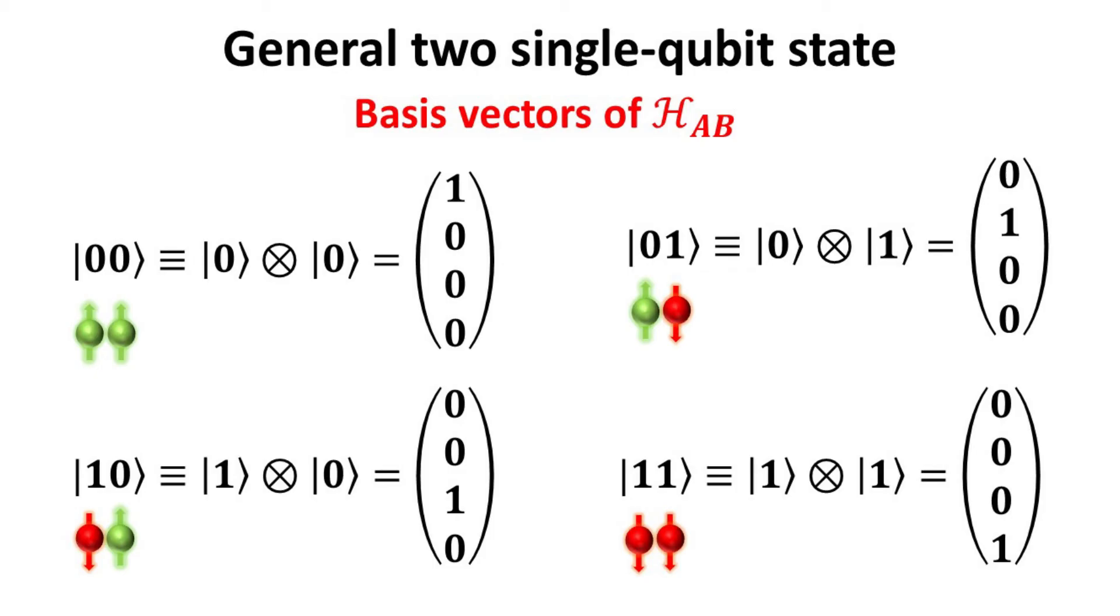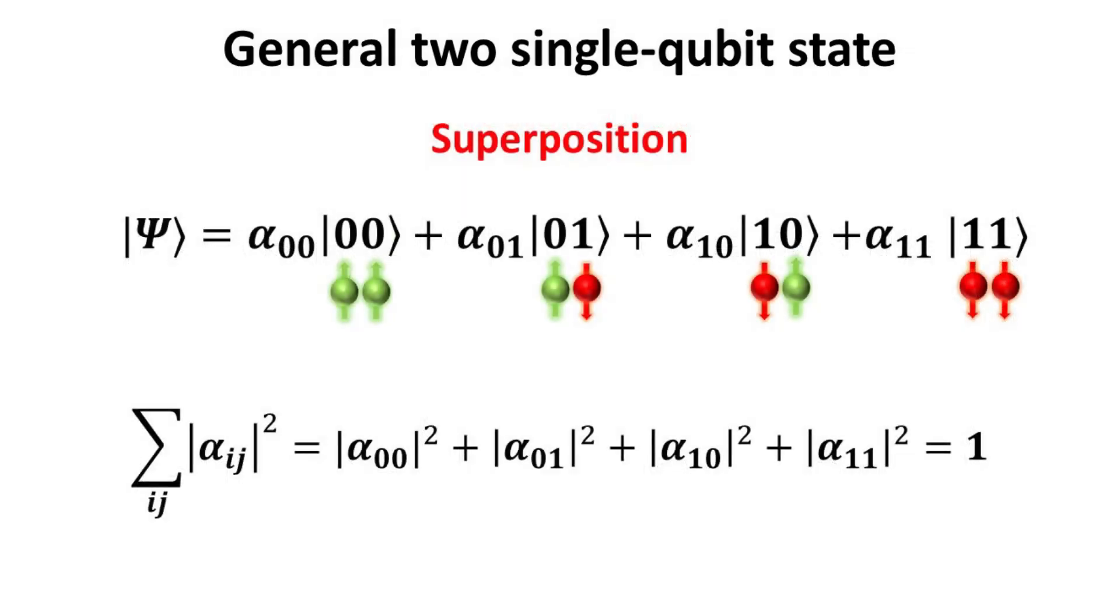Since the state vector of the composite two qubit system is a four-dimensional vector, there are a total of four basis vectors. It will be instructive to enumerate them. They are given by the 0 tensor 0 ket, 1 tensor 0 ket, 0 tensor 1 ket, and 1 tensor 1 ket. The general two-qubit composite state vector can then be written as superposition of these basis state vectors, where the amplitude alpha 0 0, 0 1, 1 0, and 1 1 must satisfy the normalization condition as shown.